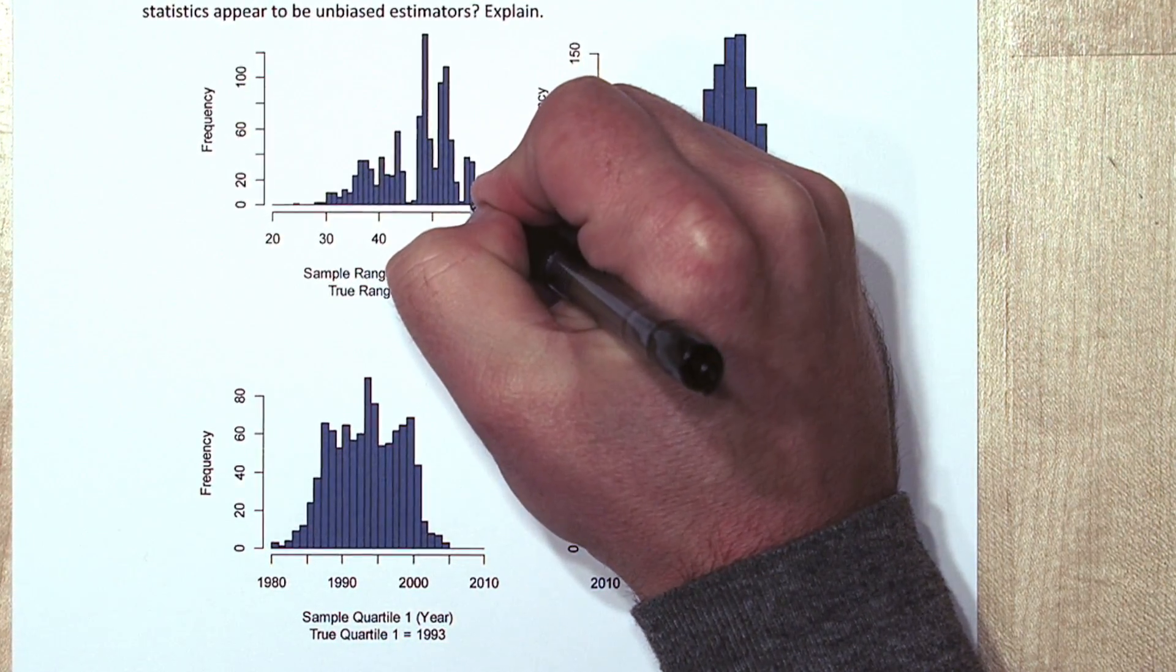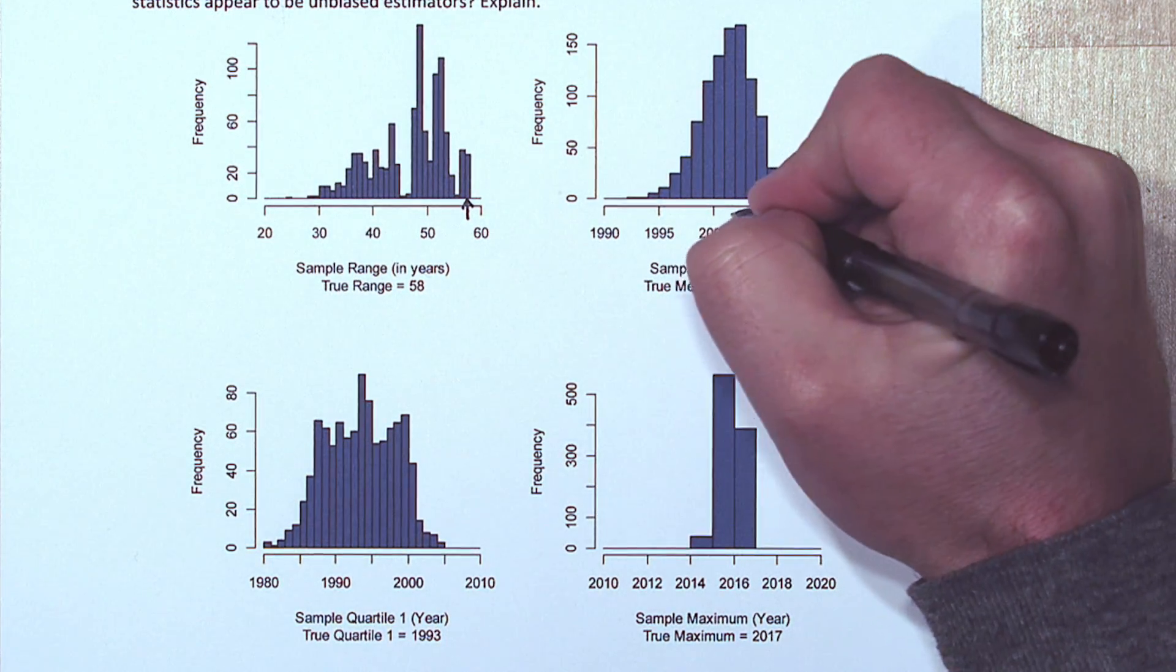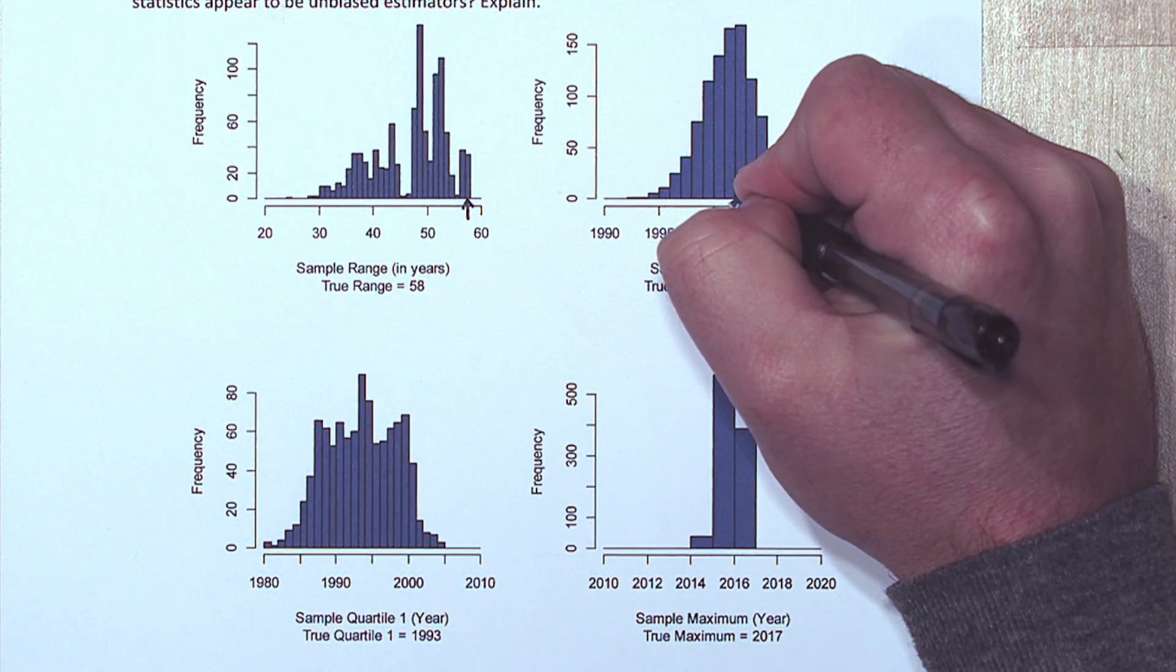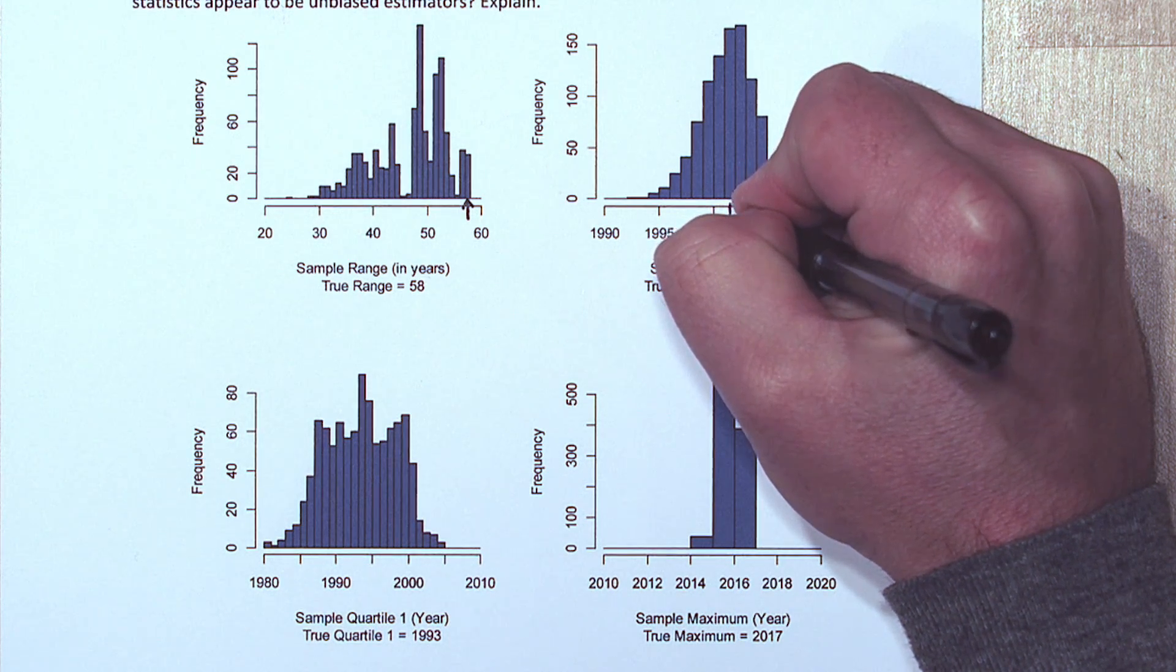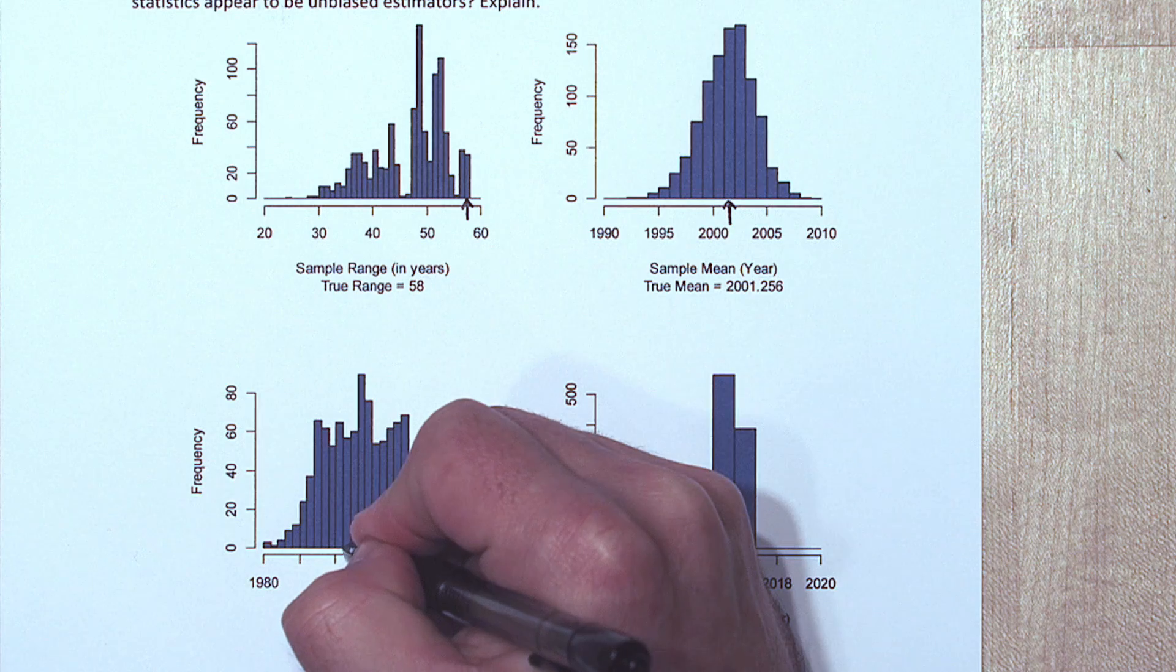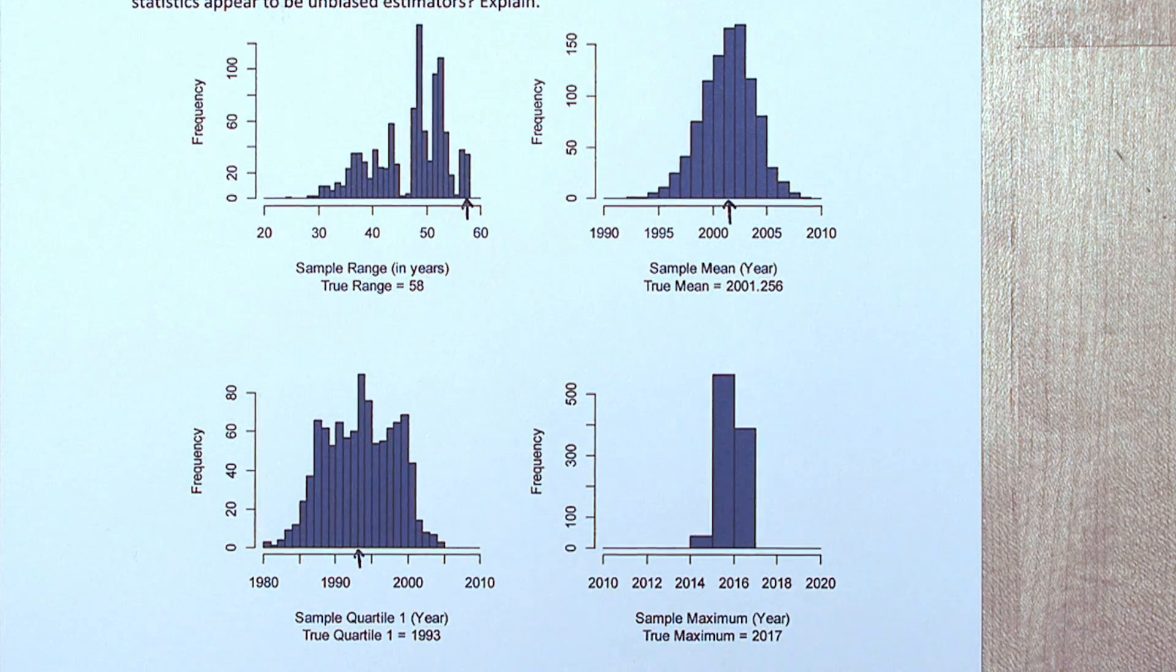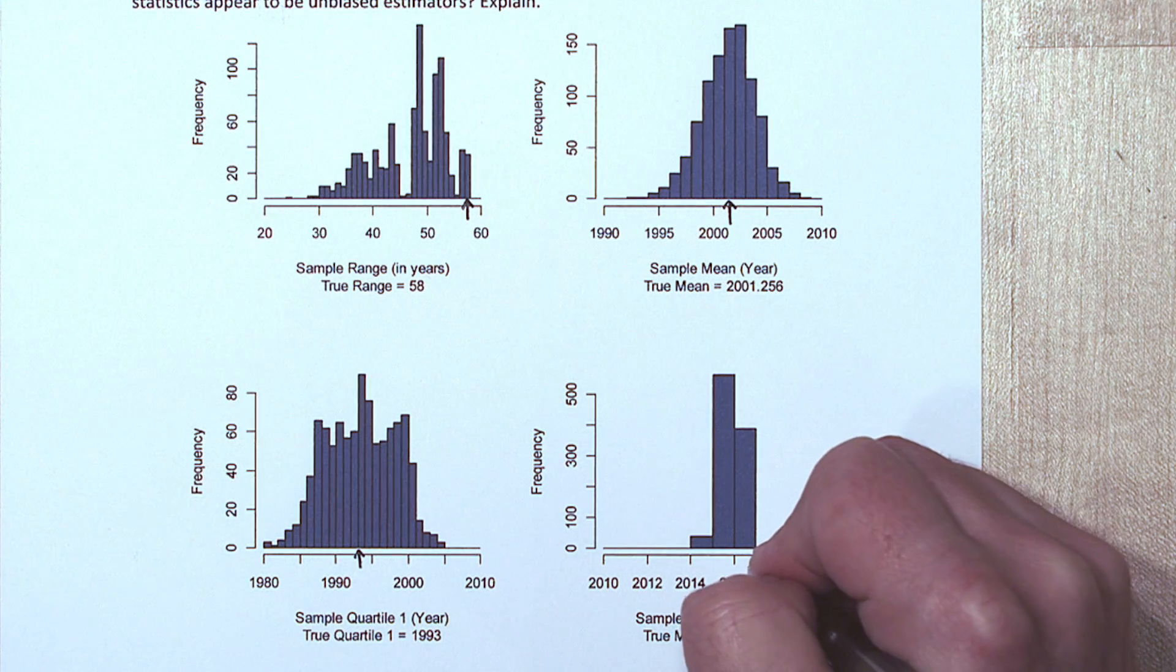So the true range is 58, that's right here. The true mean was 2001.256, that's about right here. The true quartile 1 was 1993. And the true maximum was 2017.